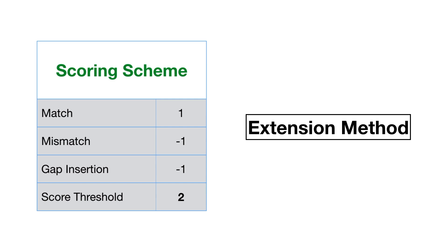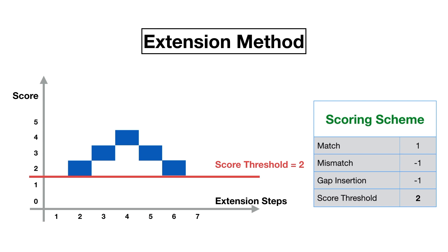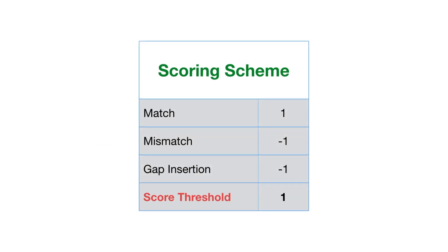Seeds are extended into gapped local alignments as far as the alignment score is greater than or equal to a predefined score threshold. An extension stops whenever the score of the alignment falls below the score threshold. The graph illustrates the variations of the alignment scores of an extension under the score threshold of 2. The extension stops as soon as the score is less than 2. For our example, we will use a score threshold of 1.